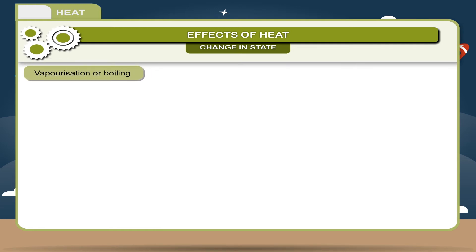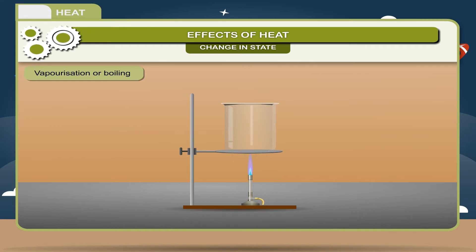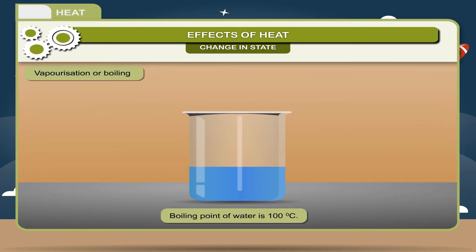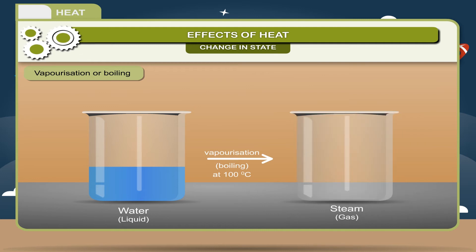Vaporization or Boiling: Vaporization or boiling is the process in which a liquid changes into gaseous state at constant temperature by absorbing heat energy. The constant temperature is called the boiling point, which is different for different liquids. For example, the boiling point of water is 100 degree Celsius. Water, a liquid, undergoing vaporization or boiling at 100 degree Celsius, gives rise to steam, a gas.